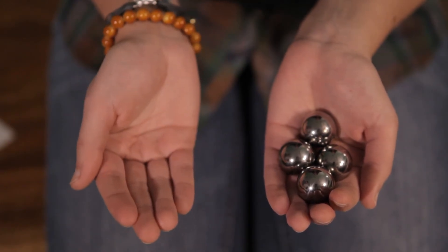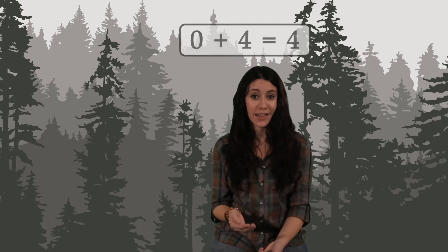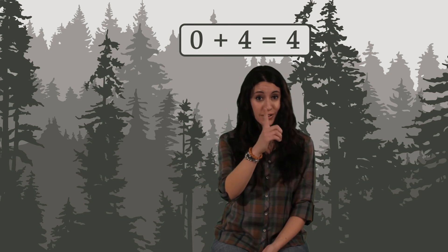In this hand, I have zero things. And in this hand, I have four things. If I add them together and count the result, I have four things. We write this as zero plus four equals four.